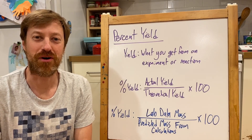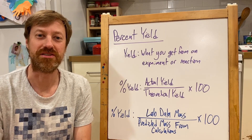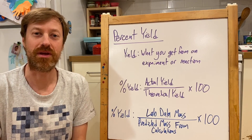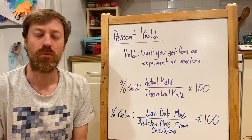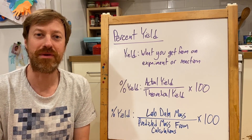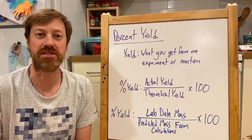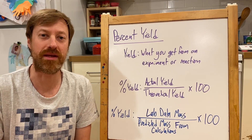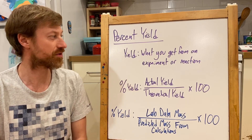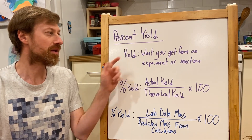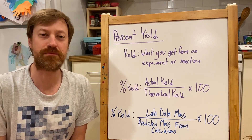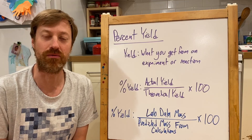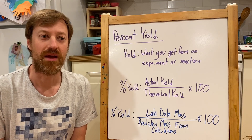If you're doing a lab that involves calculations and chemical reactions, remember that stoichiometry — one thing you'll often be asked to calculate is the percent yield. So let's talk about what yield is first off. Yield is what you get from an experiment or reaction.